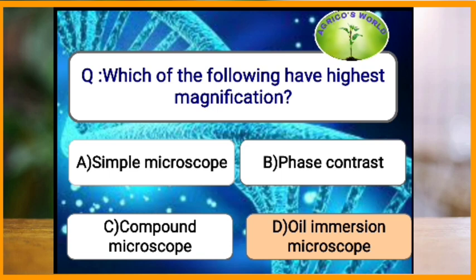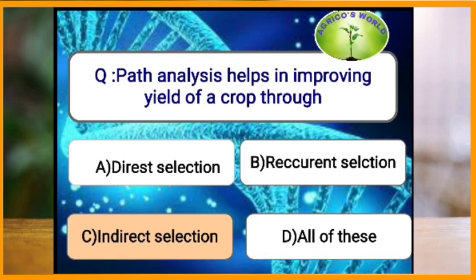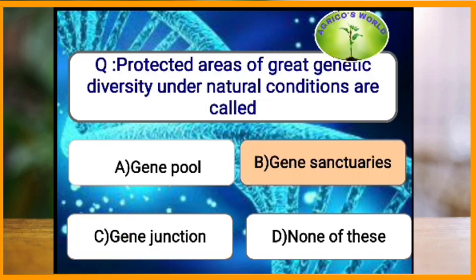Which of the following has the highest magnification? The oil immersion microscope has the highest magnification. Path analysis helps in improving the yield of crops through indirect selection. The protected areas of great genetic diversity under natural conditions are known as gene sanctuaries.